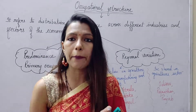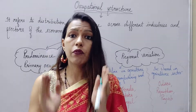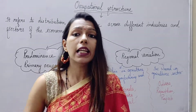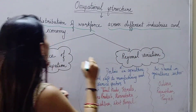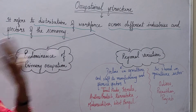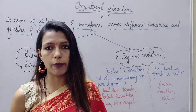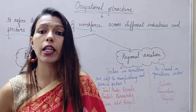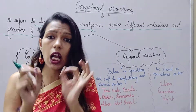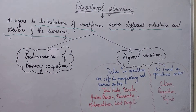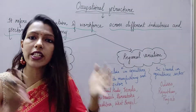Occupational Structure refers to your country's workforce — that is, the working people. It refers to the distribution of workforce across different industries and sectors of the economy. That means how many people are working in the primary sector, secondary sector, and tertiary sector.